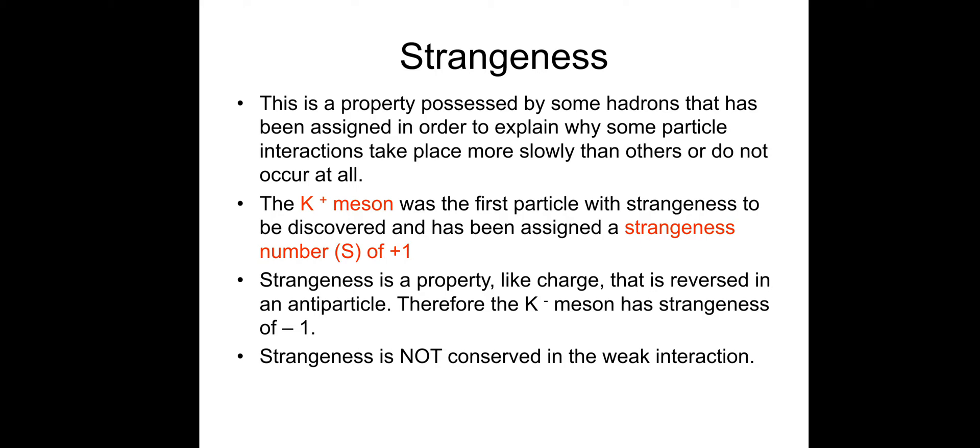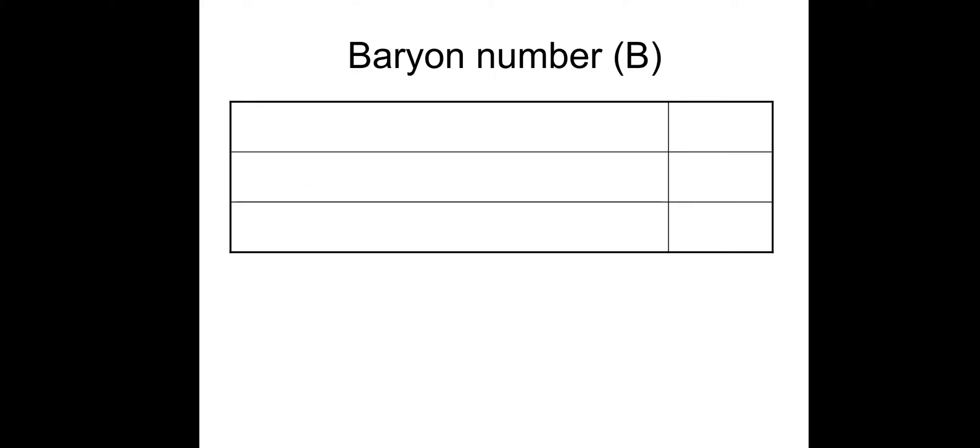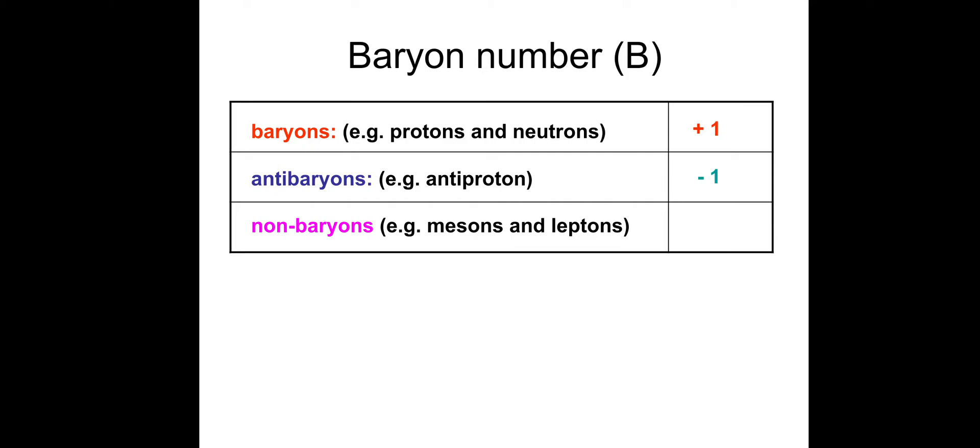Strangeness is not conserved in the weak interaction. When you practice exam style questions, that can possibly come up as an answer. Baryon number: baryons like protons and neutrons have a baryon number of plus 1. Antibaryons like antiprotons or antineutrons have a baryon number of minus 1. Non-baryons like mesons or leptons have a baryon number of 0. In all interactions, the total baryon number is conserved.